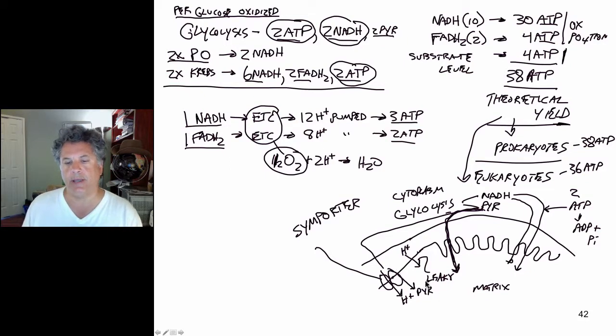So pyruvate gets into the matrix of the mitochondrion by virtue of being transported by a symporter, integral membrane protein, that uses hydrogen ions to provide energy for that importation of pyruvate. And so not all hydrogen ions, then, are going through the ATP synthase molecule. The membrane is leaky and we need to have hydrogen ions that are co-translocated with pyruvate. So we lose some hydrogen ions that way.